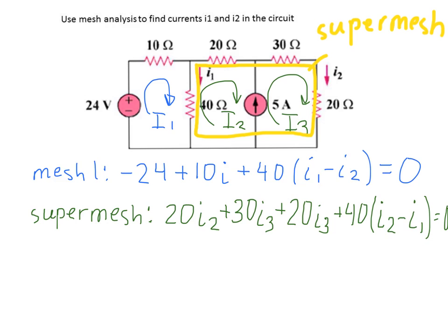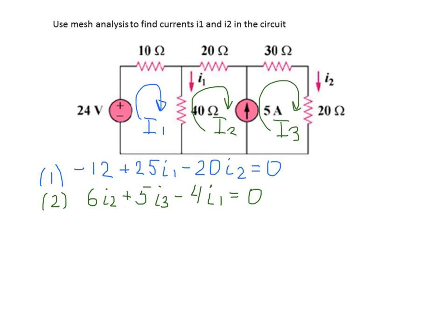Now let's simplify these two equations from mesh 1 and the super mesh. Looking at them, we still can't solve the system because we have three unknowns — I1, I2, and I3 — but only two equations. So we need to create one more equation, which we can obtain from the 5A current source.